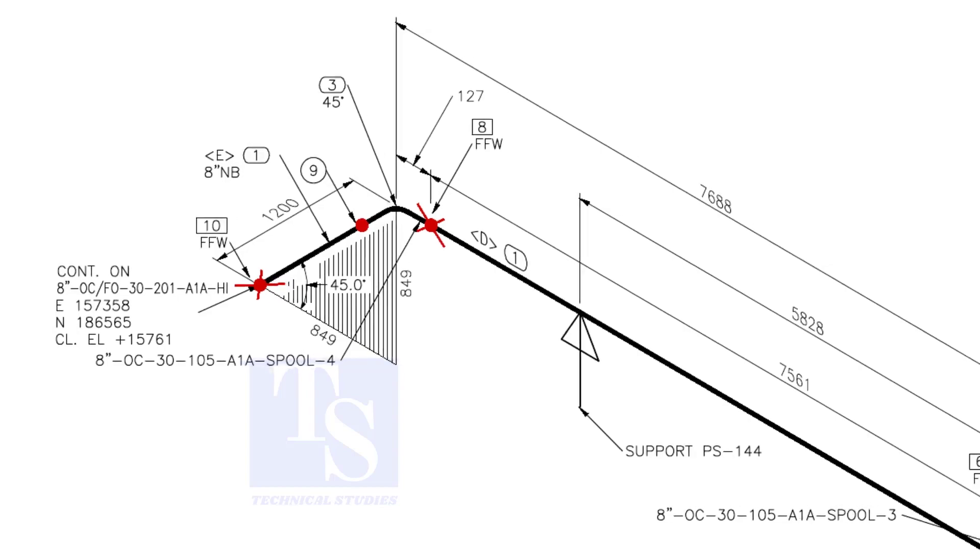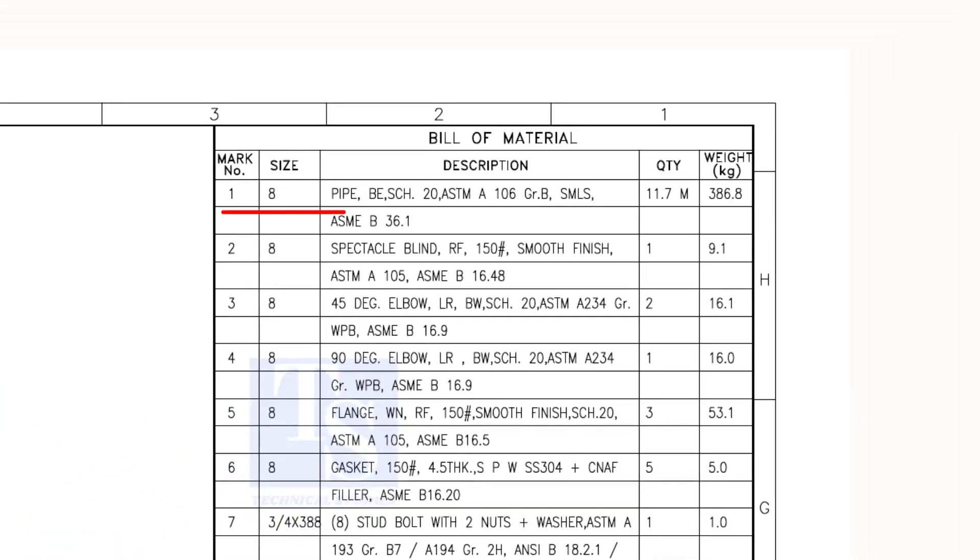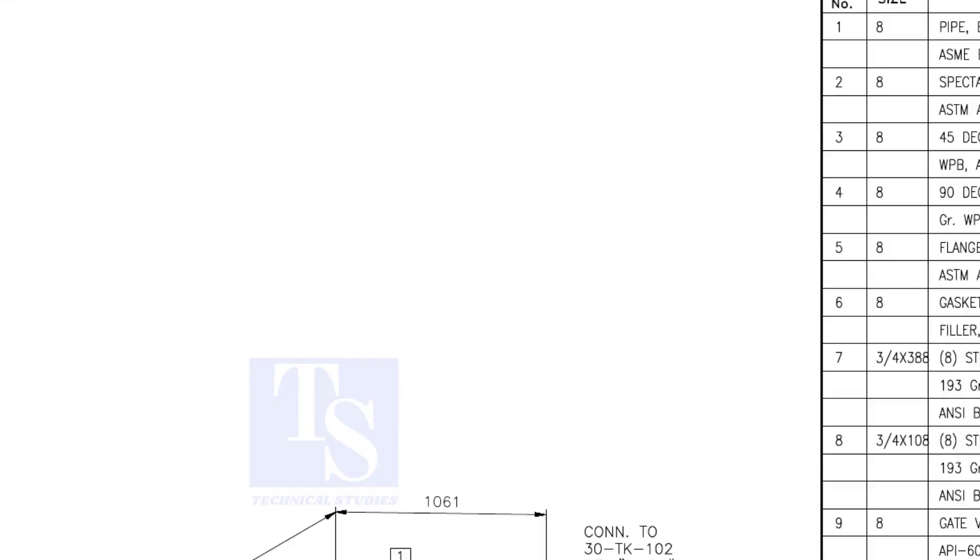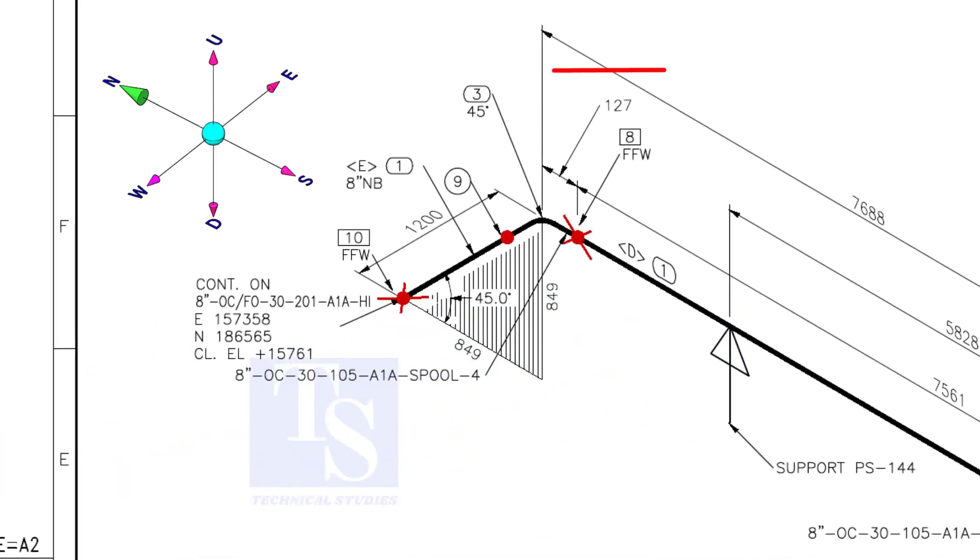Let us confirm in the material list. As per the list, item number 1 is 8-inch bevel end schedule 20 seamless pipe. Item number 3 is 45-degree long radius butt weld schedule 20 elbow. As per the drawing, the pipe goes to the north and bends 45 degrees to the down direction. Let us fabricate and complete the welding separately.